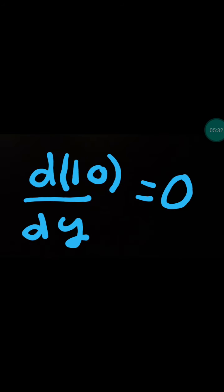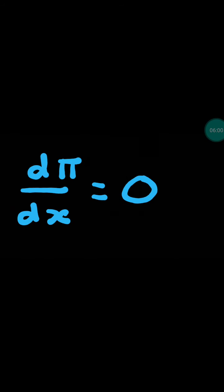For example, d/dy of 10 equals 0, because 10 is a constant — 10 years back it was 10, now it is 10, and 10 years from now it will still be 10. Similarly, d/dx of pi equals 0. Pi is 22/7 or 3.14, but it is a constant, so its differentiation with respect to x is 0.